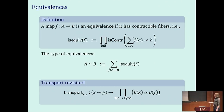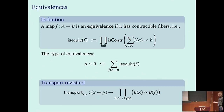Once we have contractibility, we can define what it means for a map f from A to B to be an equivalence: f is an equivalence if it has contractible fibers — for any b : B, the type of pairs (a, p : Id(f(a), b)) is contractible. The type of equivalences A ≃ B is then the type of pairs consisting of a map f : A→B together with a proof that it is an equivalence.